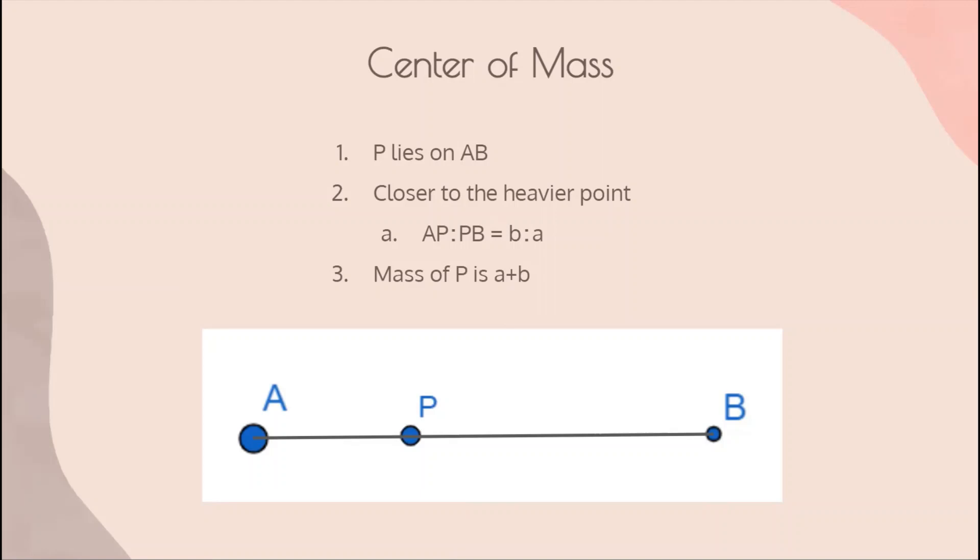A weighs twice as much as B. Both A and B are trying to pull P into their direction, but A's pull is twice as strong because A has twice the mass. This means that P is twice as close to A as it is to B, or the ratio AP to PB is 1 to 2. In a more generalized form, the ratio of the length of AP to PB is equal to the mass of B to the mass of A.